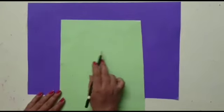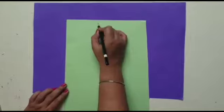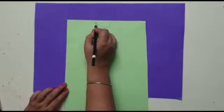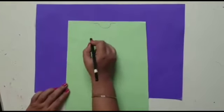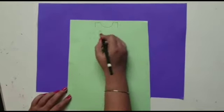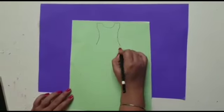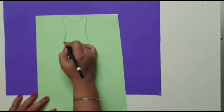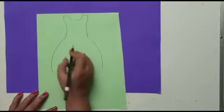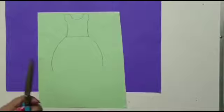First we will draw a shape of a dress. You can take any color. It's a very simple shape, a curve. So here we are drawing a frock. Now cut this.